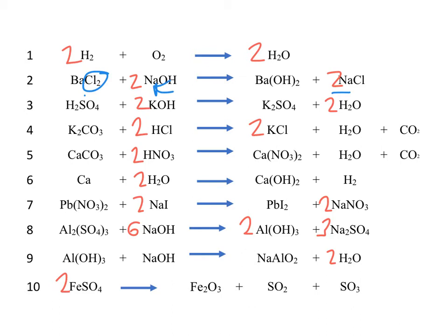Most of these are quite straightforward. Maybe 8 is a bit of a challenge. The key thing here is that you have 3 sulfates, so that means you're going to have to have a 3 there to get your 3 sulfates. And that means you're going to need 2 Al(OH)3 because you've got a 2 there as well. And then you balance the sodium hydroxide.